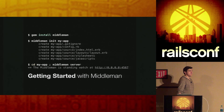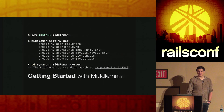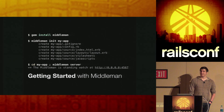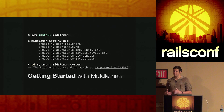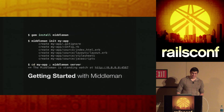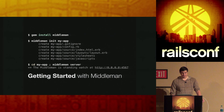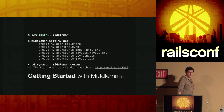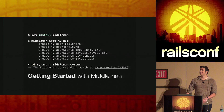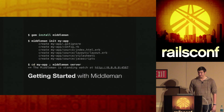Getting started with Middleman is actually very similar to getting started with a Rails application. You install the gem, initialize the application, and it creates all this boilerplate code. You can see from the directory structure you have your configuration file, a default index.html.erb, a layout file, and all your assets — stylesheets and JavaScripts. You spin up the server and it boots extremely fast — in under a second you can hit the server and things are just working.